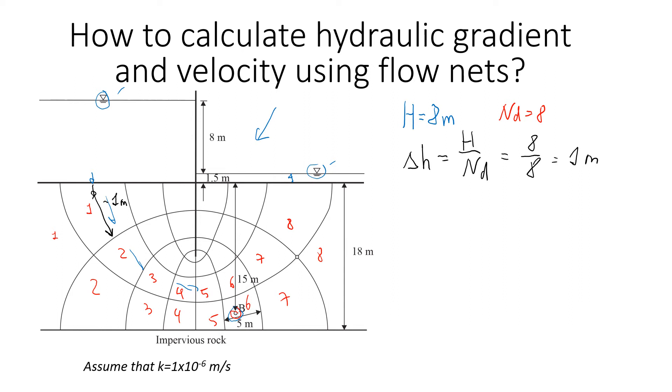Now let's find the hydraulic gradient for point B. What we need to know is delta h and L, because the definition of hydraulic gradient is delta h divided by L. In this case, water will flow in this direction. It starts from this equipotential line and goes all the way to this line. So we need to know this distance. This is going to be our first point here and second point here.